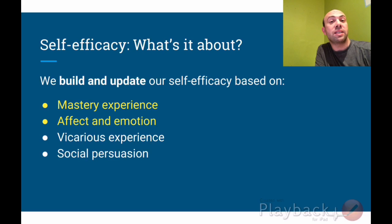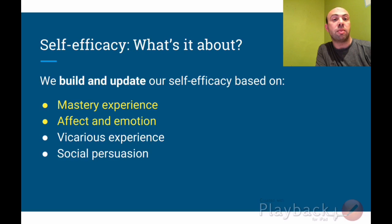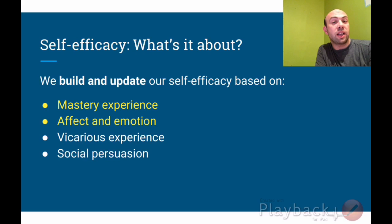It's said that we build and update our own self-efficacy beliefs based on four inputs. The first two I labeled as yellow because they come more internally. First is the experience of having mastered something — we look objectively at the things we've done and accomplished, and we gain self-efficacy from that. Second is affect, emotion, and physiological response to how we feel in a moment or after producing something. Third is watching others and building self-efficacy vicariously through seeing how they perform. And fourth is social persuasion — a fancy way of saying the feedback we get, verbal and nonverbal, from other people.